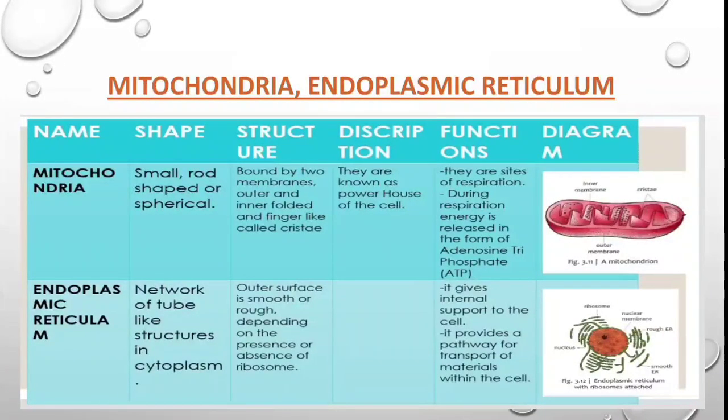The structure of mitochondria: it is bound by two membranes. There is an outer membrane and an inner membrane. The inner membrane has finger-like folded structures, which you can see labeled in the diagram. These folds are called cristae.